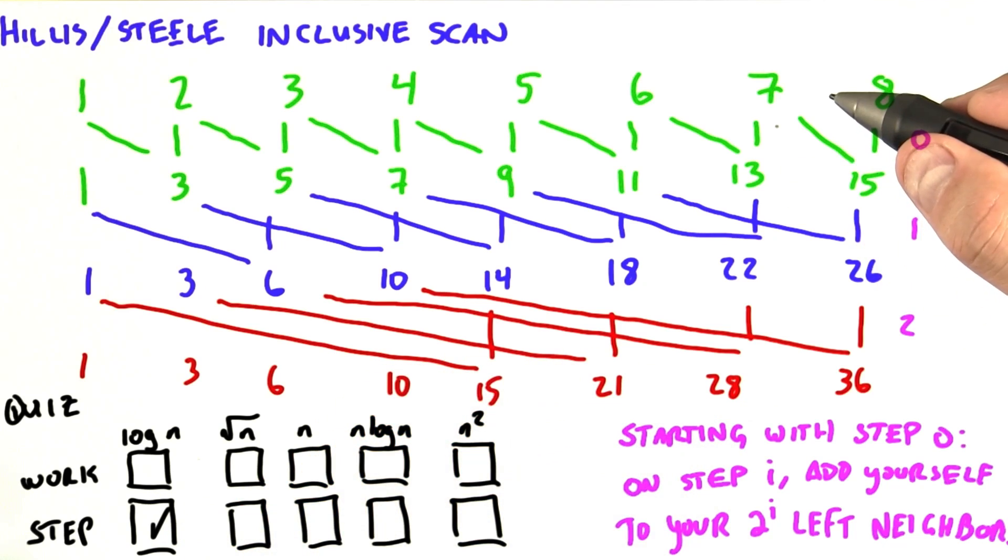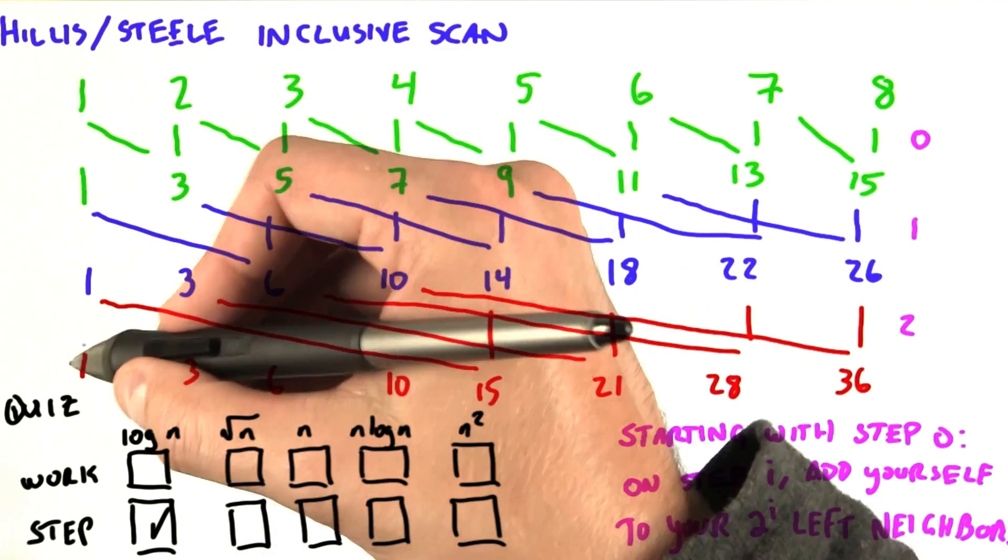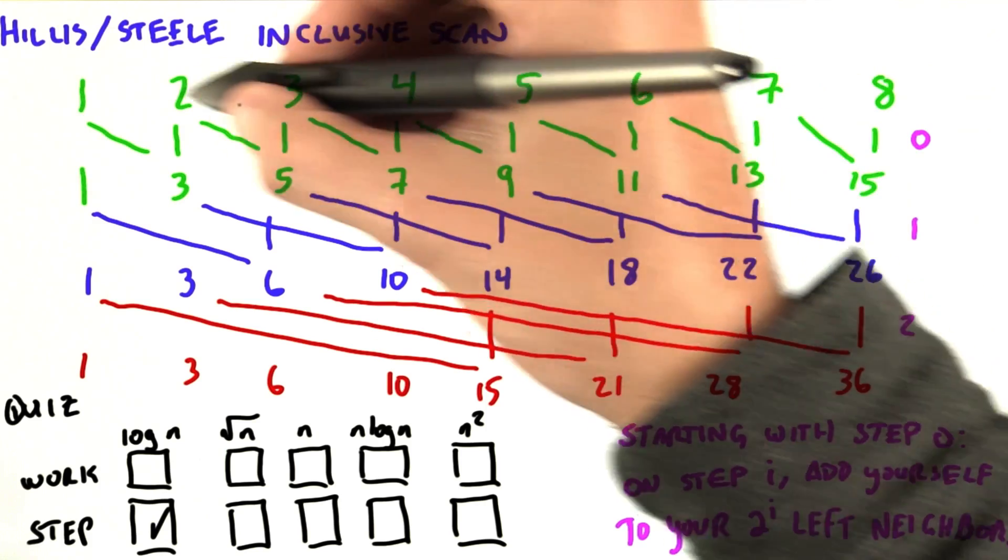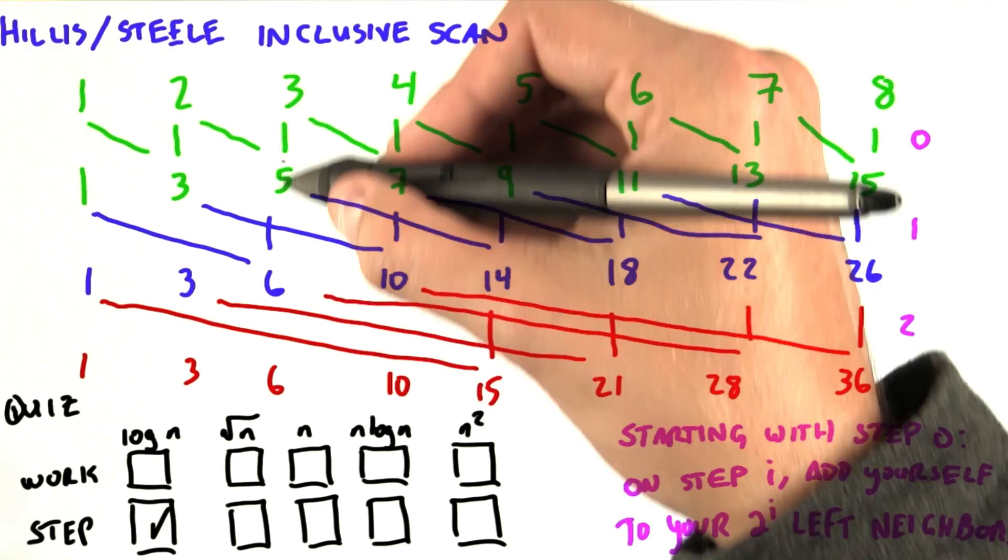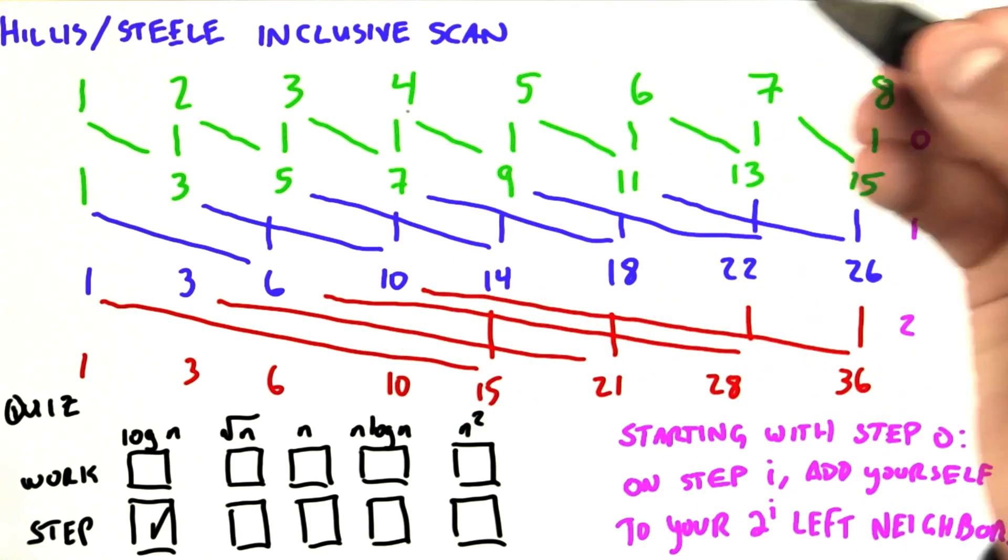So now we turn to computing the amount of work that we're going to do. And the way we're going to do that is we're going to think about this matrix that we drew as a big rectangle. And we're going to say, well, at every point in this rectangle, we're doing a computation.